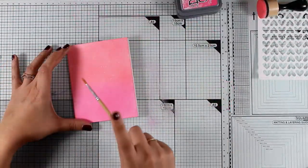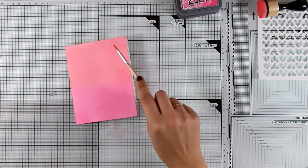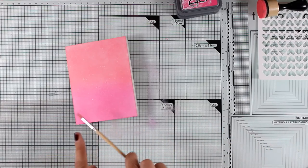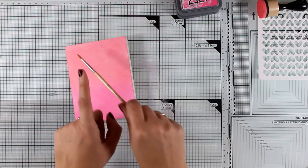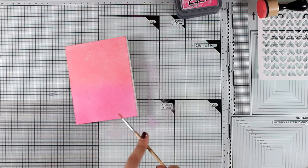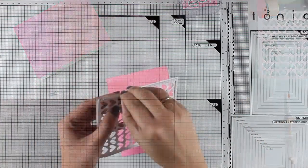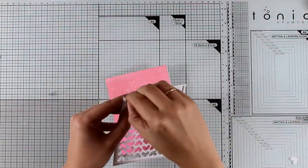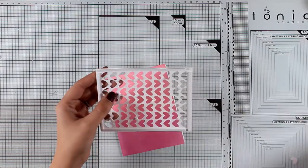I have some water on my glass mat and with a brush I'm adding some water splashes all over the place. These are going to react with the Distress Oxide ink and it's going to give a lovely look.